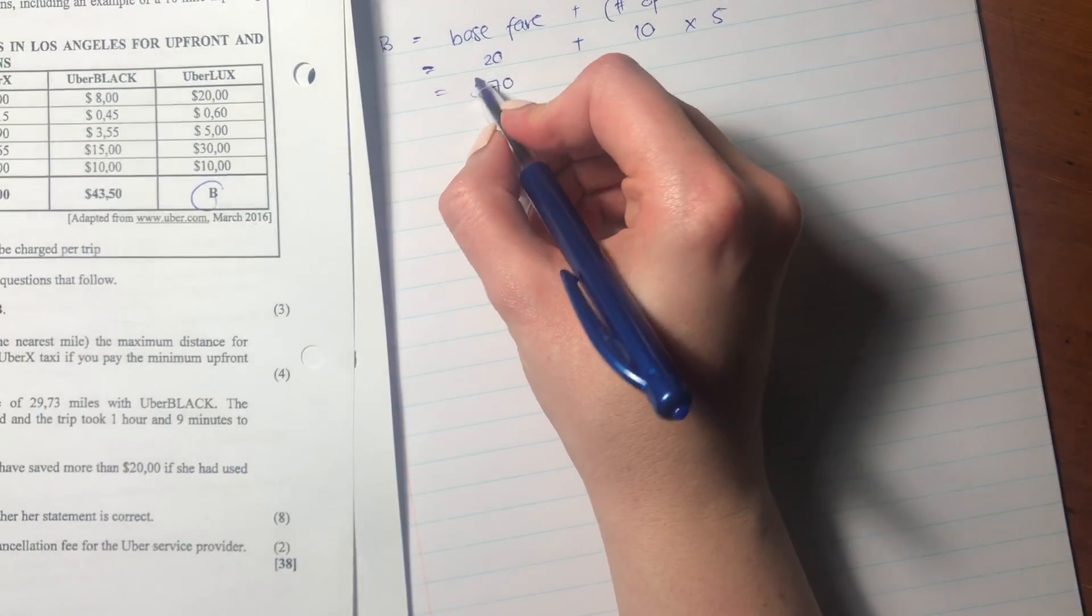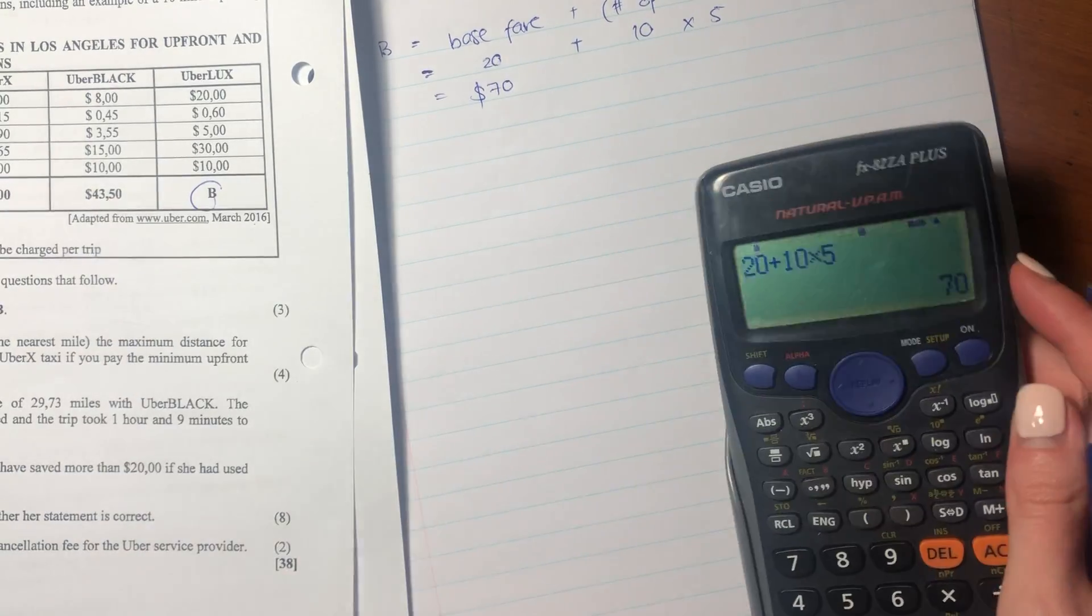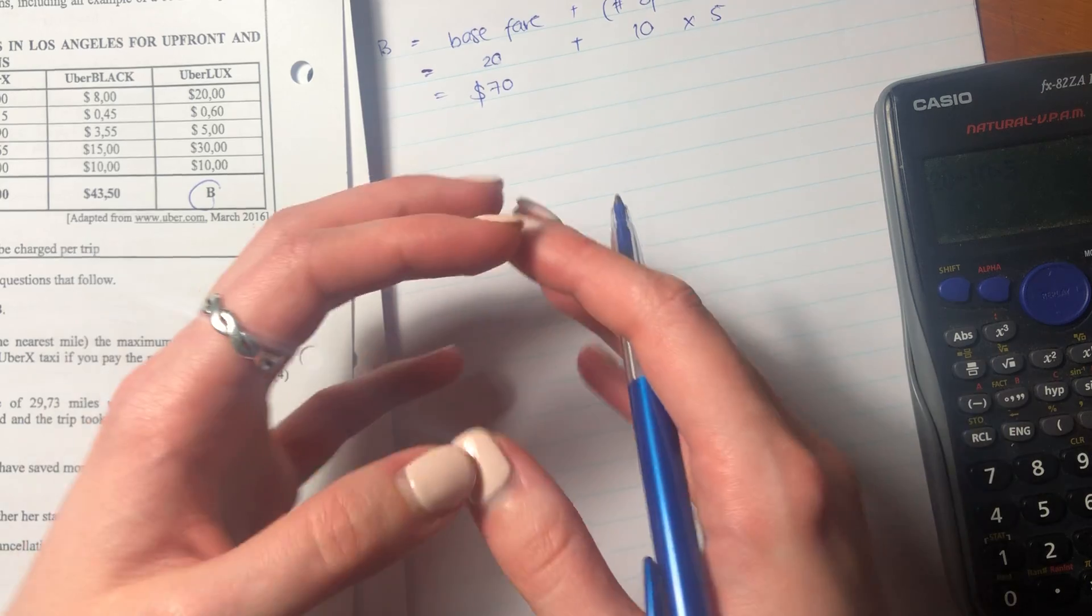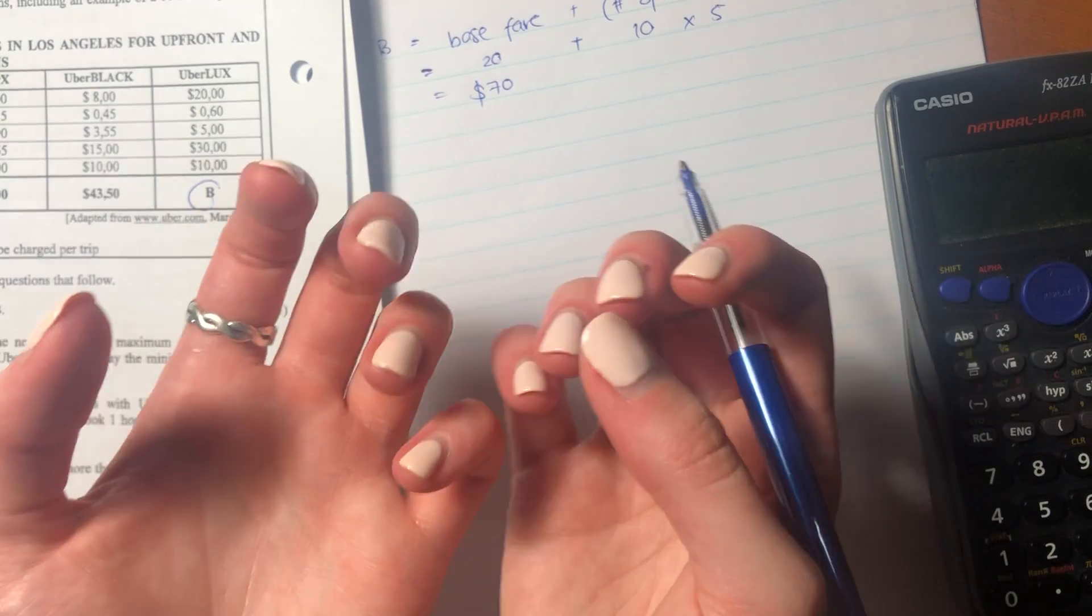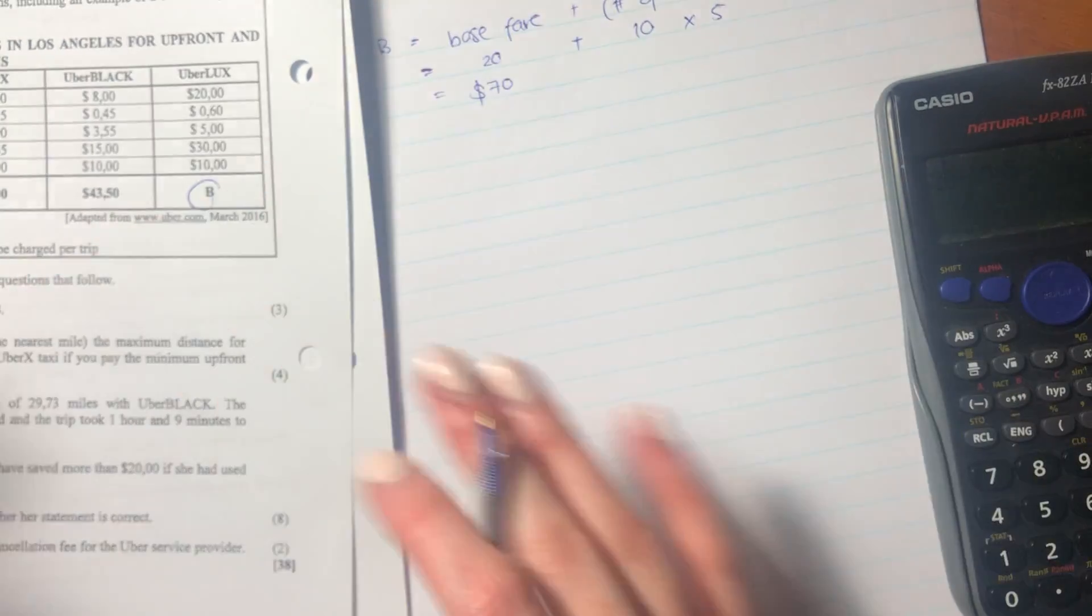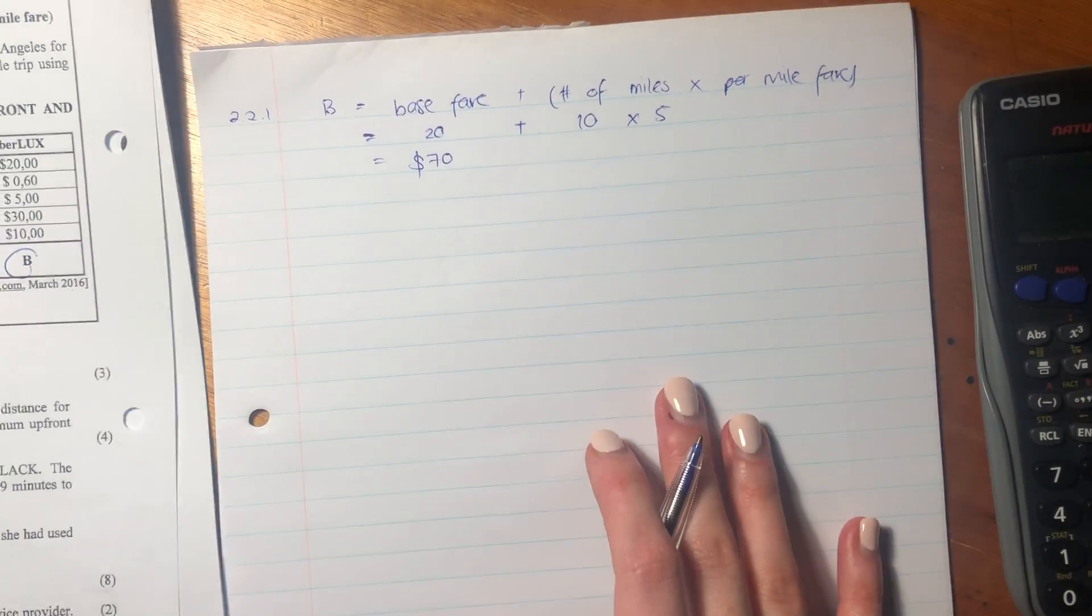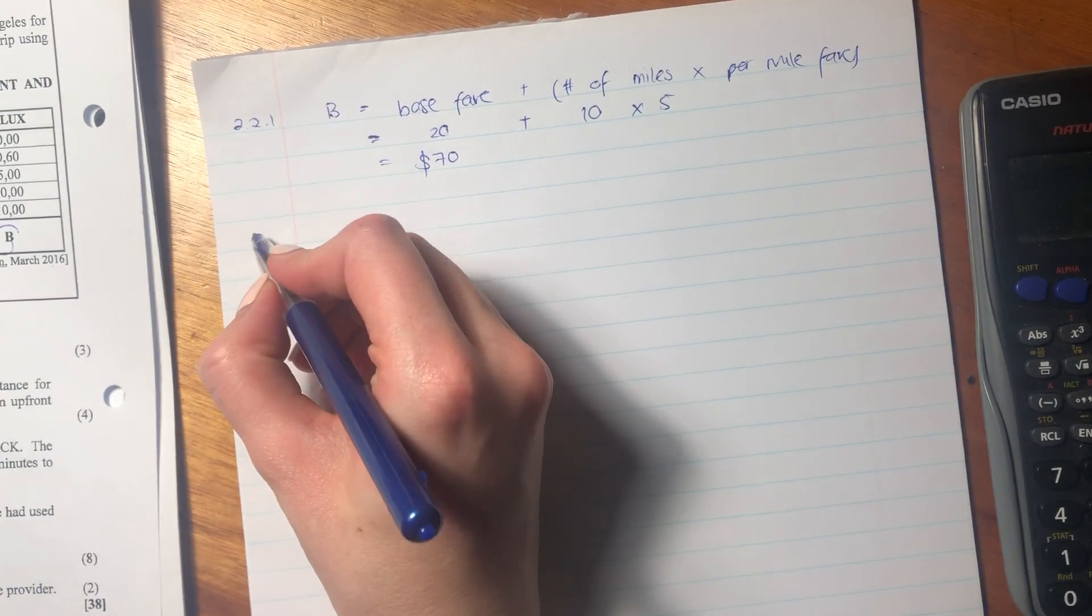70 what? It's not $70. It's always important to put in your currency when you're talking about cost because you're referring to 70-something. It's $70. Let me just make sure you can see that. Sorry if you missed that. Let's now go on to the next question.